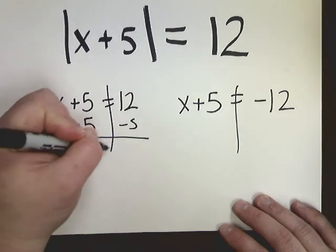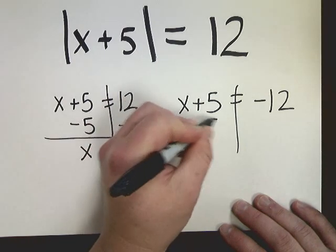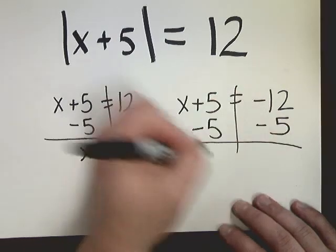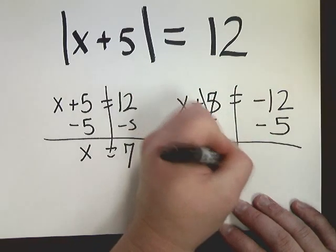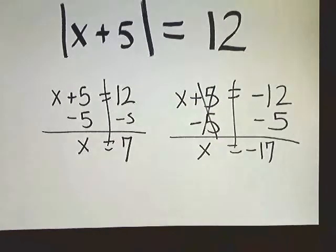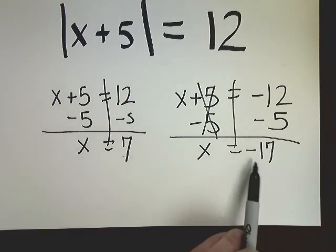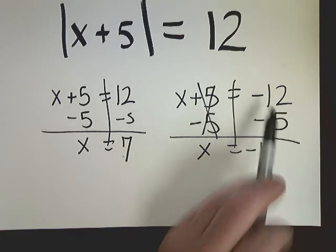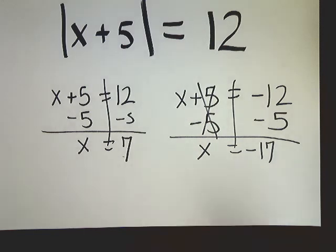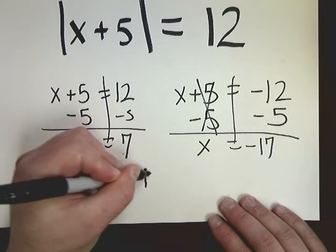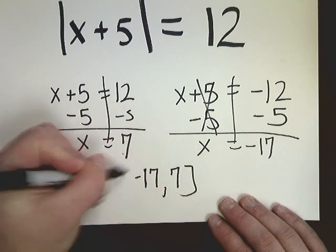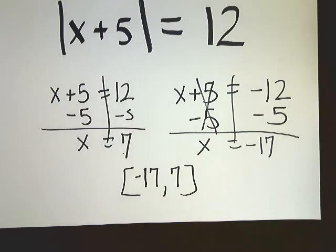From here, I just solve the one-step equations. Minus 5, so x is equal to 7. And if I do minus 5 here, x is equal to negative 17. So be very careful. Once you start adding things to the mix, you're not going to get the answer and then the negative of that answer like you did in the first one. So you'll notice that this isn't 7 and negative 7. When I take 5 away from negative 12, I get negative 17. My answer set looks like this.